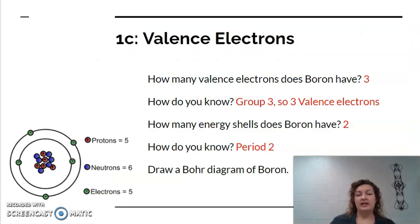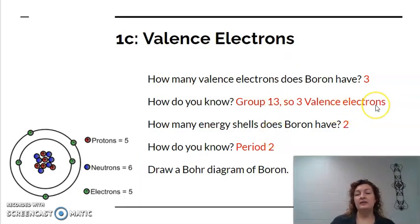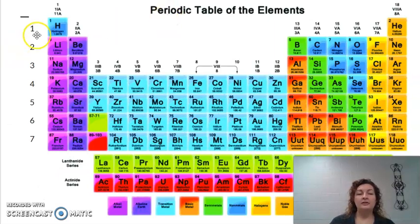So our first question says, how many electrons does boron have? Valence electrons? Well, it has three because it's in group 13, right? So how do we know? Group 13. There we go. Fixed my mistake. So it does have three valence electrons. How many energy shells does boron have? So really cool thing. These numbers on the side are period numbers. So this whole row is period one, meaning that there's one shell in our atom. This whole row here is period two, meaning there's two shells in our atom and so on and so forth. So three shells, four shells, all the way down. Boron is in period two. Do you guys see that? Period two, which means it has two shells.